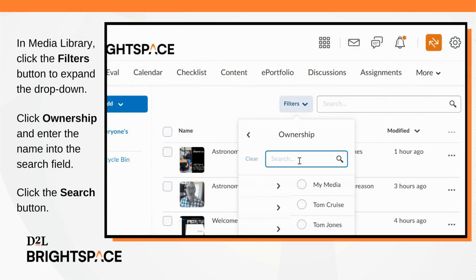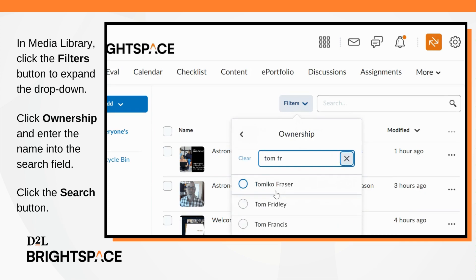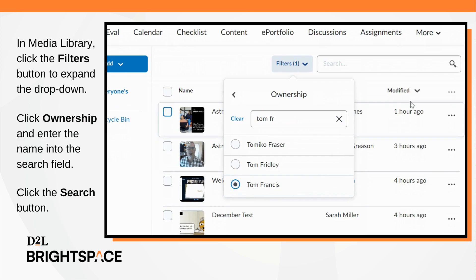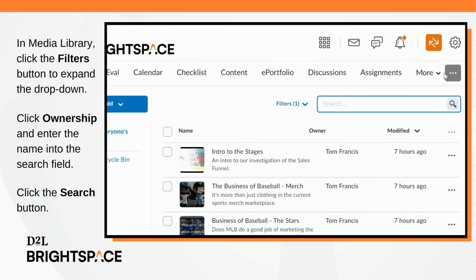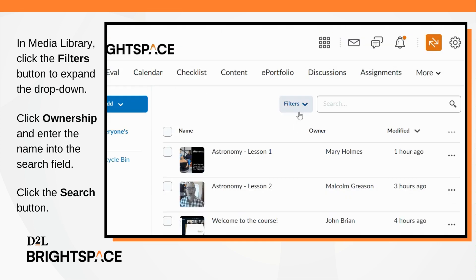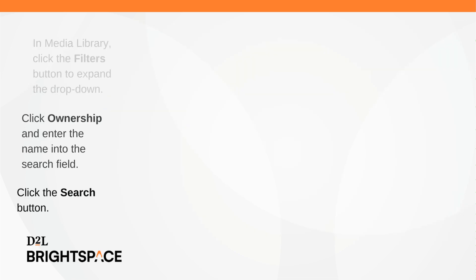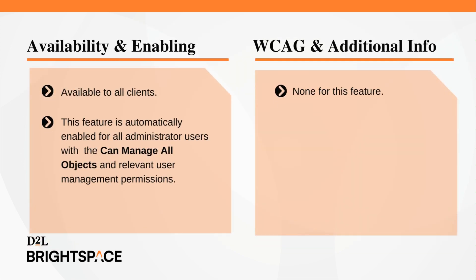In the Media Library landing page, click the Filters button to expand the drop-down menu. Click Ownership and enter the name into the search field. You can also enter partial search terms. Click the Search button with the magnifying glass to apply the filter to the search results below. The Media Library feature is available to all clients and is automatically enabled for all administrator users with the Can manage all objects and relevant user management permissions.